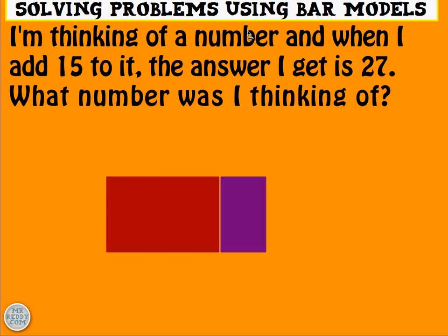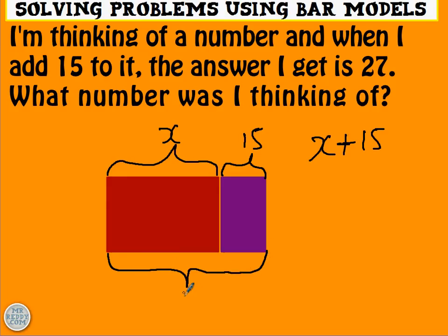Here's the first one. I'm thinking of a number and when I add 15 to it, the answer I get is 27. So this will be the number that I'm thinking of, x, this will be the 15 that I've added. I can write that in algebra like this. But the difference this time is that with this bar model we are told what the answer comes to. It comes to 27 and I can fill that in and make it an equation now. Now x plus 15 equals 27.